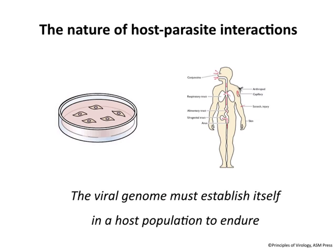We've spent the first part of this course talking about the replication cycle in cells and culture mostly. That's not how viruses exist and move in the wild — they infect hosts: humans, other animals, insects, plants, and so forth. For the rest of this course, we're going to talk about the interaction of viruses with their hosts. For a virus to endure, it has to be perpetuated from host to host, moving through a population. In nature, they must infect a host and move from one host to another.